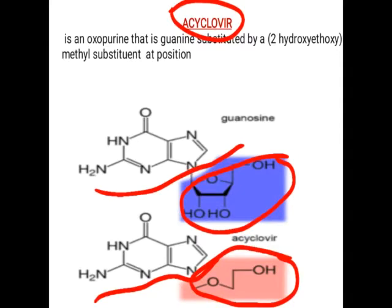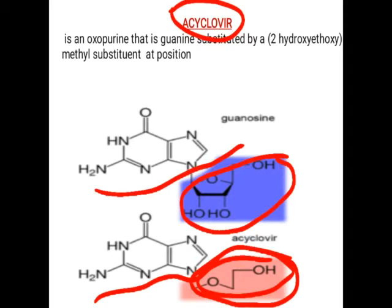Guanine is normally converted into guanine monophosphate, diphosphate, and triphosphate, which then enters into DNA or RNA synthesis. In acyclovir, the sugar part is replaced by the hydroxyethoxymethyl group. So when phosphorylation takes place, it is converted into acyclovir monophosphate, diphosphate, and triphosphate. However, since it lacks the sugar moiety, it cannot form DNA or RNA, and is therefore responsible for inhibition of DNA and RNA synthesis.